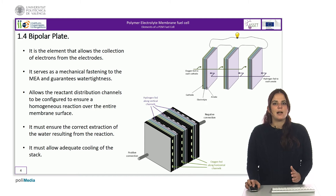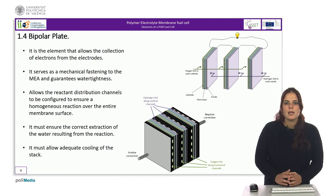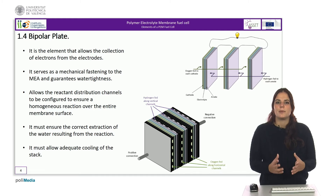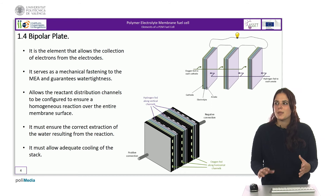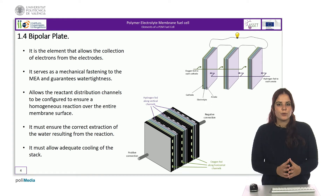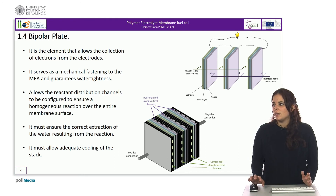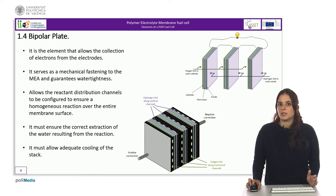The bipolar plates also have two other functions. Firstly, they serve as mechanical support for the membrane electrode assembly and guarantee the tightness of each cell, preventing the reaction gases from mixing. Secondly, they must allow the cell to be cooled to ensure that the operating temperature does not exceed 80 degrees Celsius.